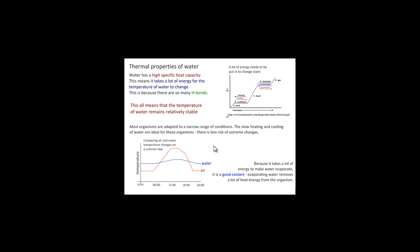Now because it takes a lot of energy to make water evaporate—in other words, it has to actually break all of those hydrogen bonds before it can evaporate—it is a good coolant. So evaporating water actually removes lots of heat energy from an organism. That's the other property that water has: it's got a high heat of vaporization, or sometimes known as a high heat of evaporation.